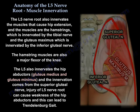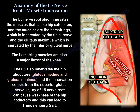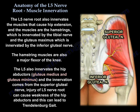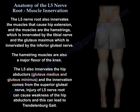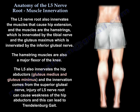L5 also innervates the hip abductors — the gluteus medius and minimus — and this innervation comes from the superior gluteal nerve. Injury of the L5 nerve root can cause weakness of the hip abductors, and this can lead to a Trendelenburg gait.